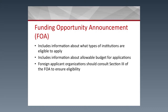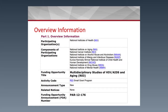The FOA includes information about the types of institutions that are eligible to apply and the allowable budget for the applications. Foreign applicant organizations should consult Section 3 of the FOA to ensure eligibility. This is a snapshot of the Funding Opportunity Announcement.